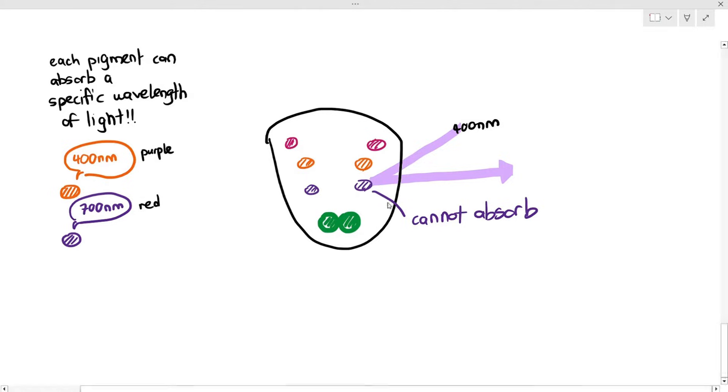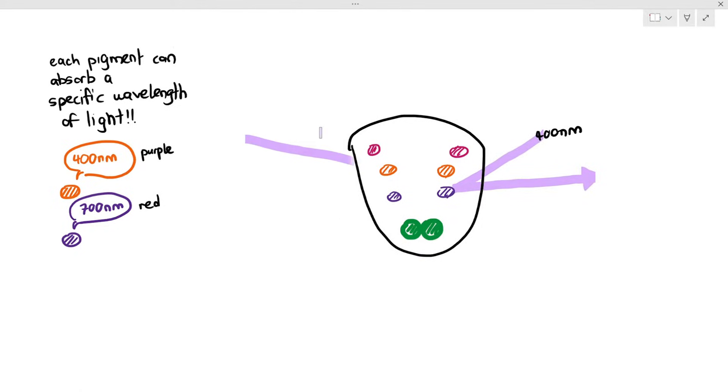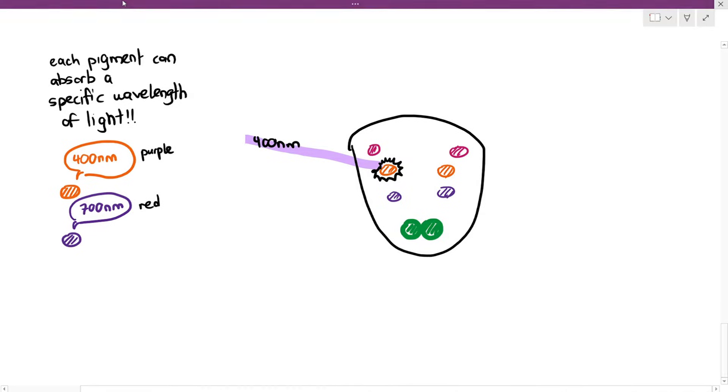That is why the orange pigments are present, because when 400 nanometer wavelengths or purple light hits the orange pigment, what happens? It doesn't get reflected. The orange pigment can then absorb the light.